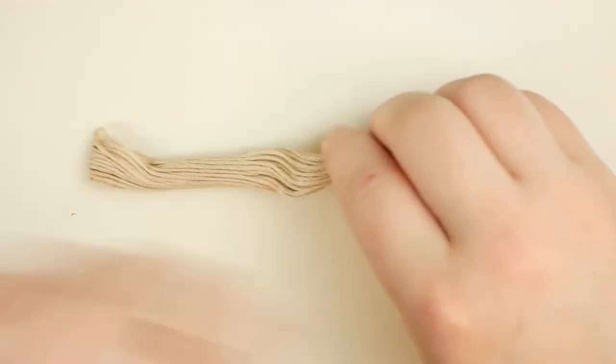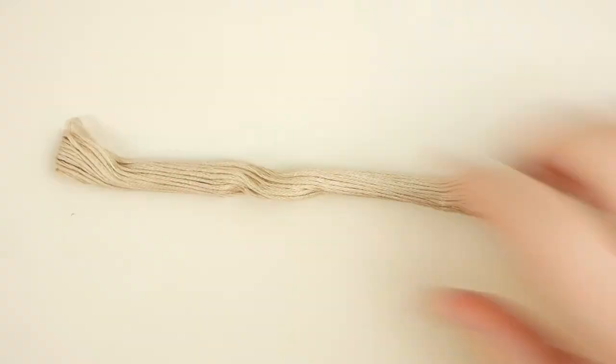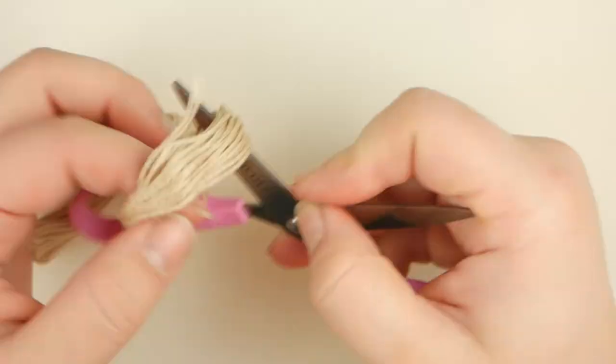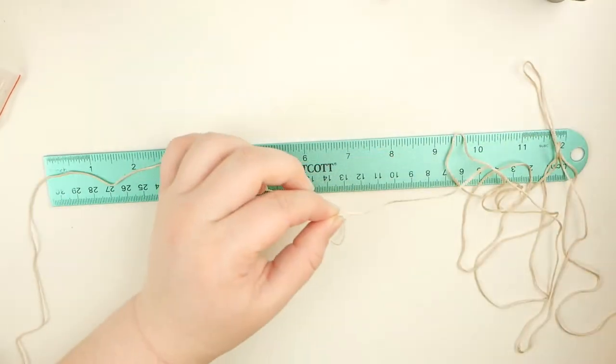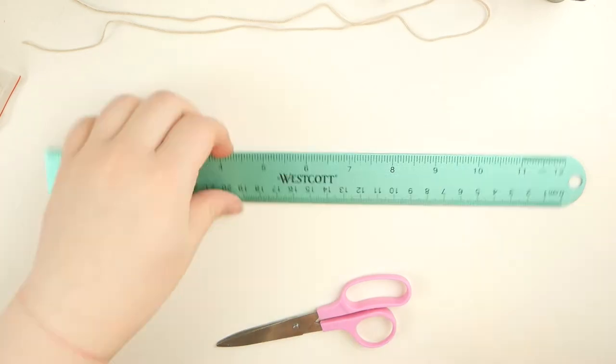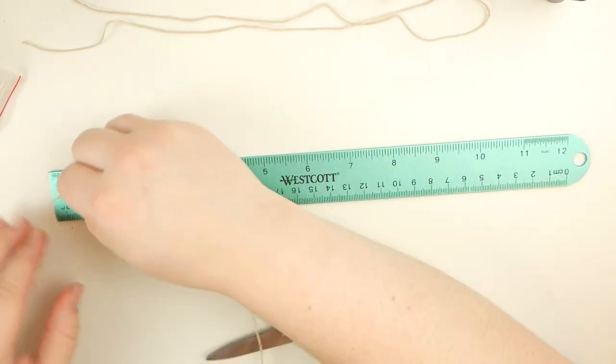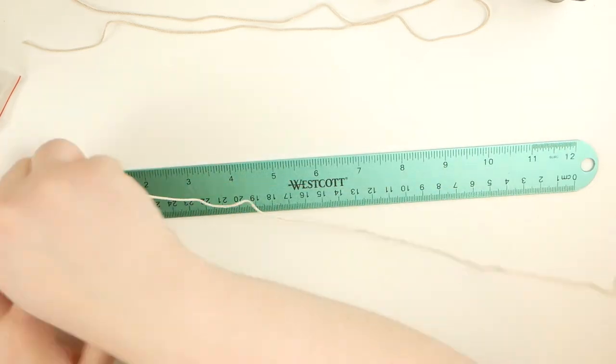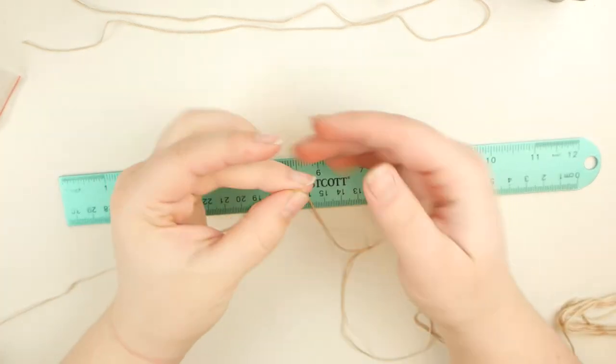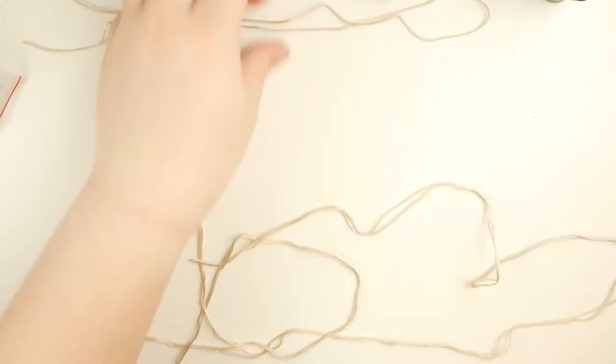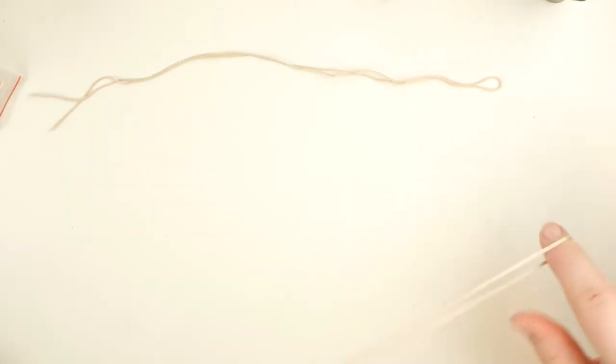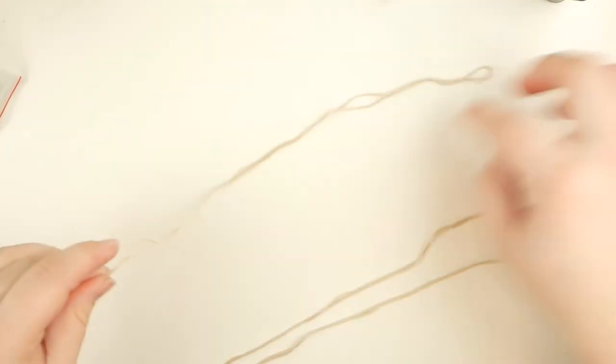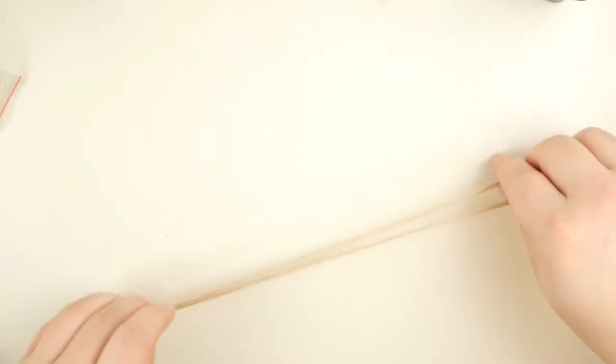So the first thing we're going to do is measure out our embroidery floss. So we are going to need three strands for this. So your first strand is going to be 22 inches long. And then our next two strands are going to be 55 inches long. So I'm just going to take the two long strings, meet up the ends, and just pull to where there's a loop. And then we're going to do the same thing with our 22 inch strand, just like that.